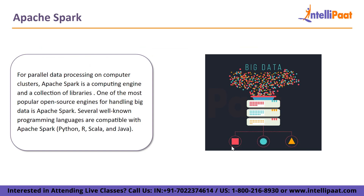For parallel data processing on computer clusters, Apache Spark is a computing engine and collection of libraries. It is one of the most popular open source engines for handling big data. Several well-known programming languages are compatible with Apache Spark, such as Python, R, Scala, and Java. It provides libraries for many different processes including data loading, SQL queries, machine learning, and streaming computation.